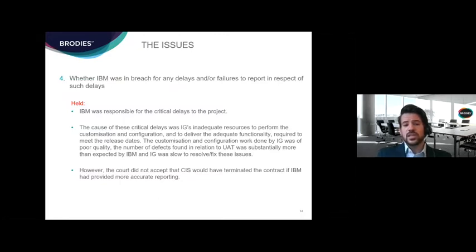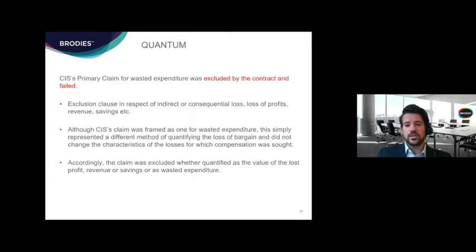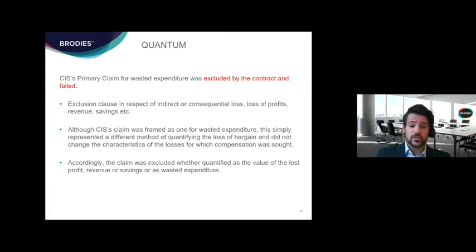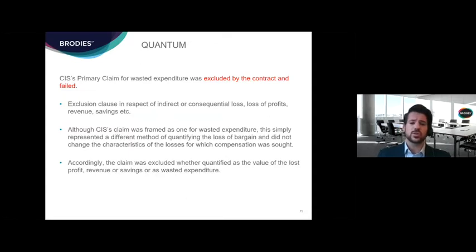Moving to the quantum of the claim, quite significantly there was an exclusion clause in the contract. CIS's primary claim for wasted expenditure was excluded by that clause and failed. The exclusion clause covered indirect or consequential loss, loss of profits, revenue, savings, etc. Although CIS's claim was framed as one for wasted expenditure, the court found this simply represented a different method of quantifying the loss of bargain and did not change the characteristics of the losses. Accordingly, the claim was excluded whether quantified as the value of lost profit, revenue, savings, or as wasted expenditure.